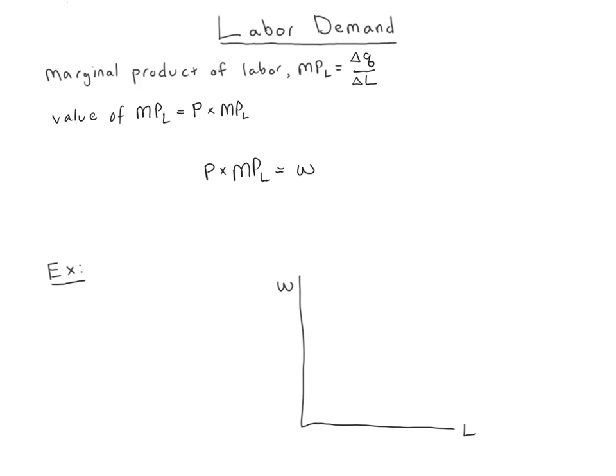Remember, with MC equals MR, it was really an equation about Q and picking the quantity, even though the Qs are typically suppressed and you don't really see them. It's similarly the case that even though you don't see much about L here, it's really all about picking L.